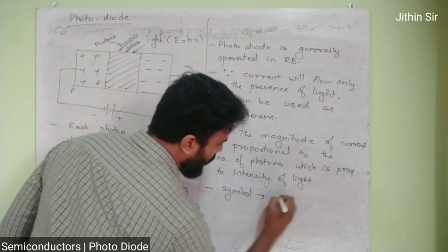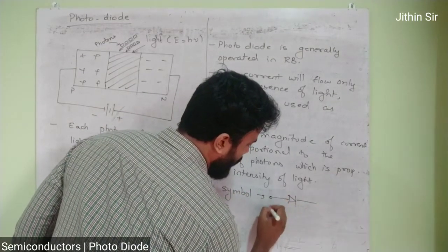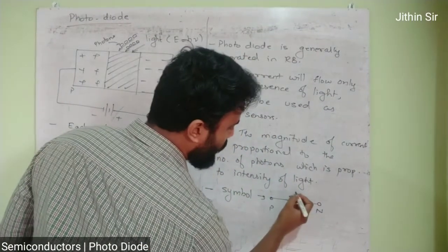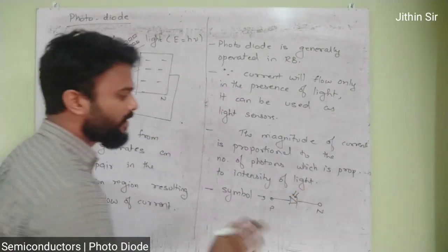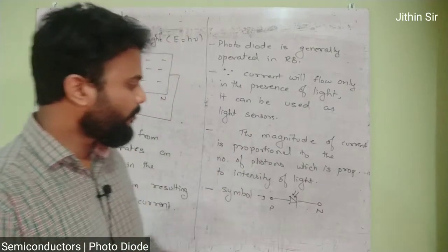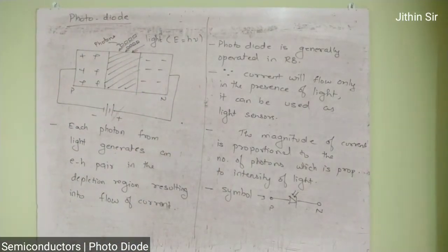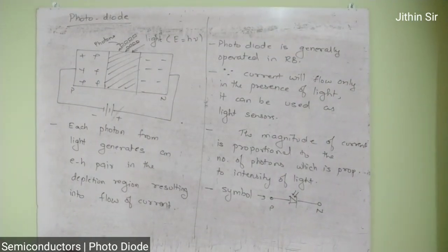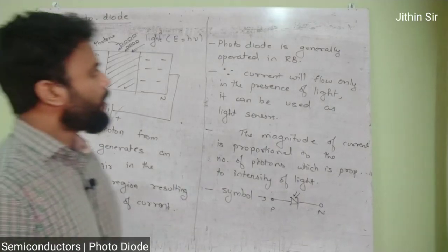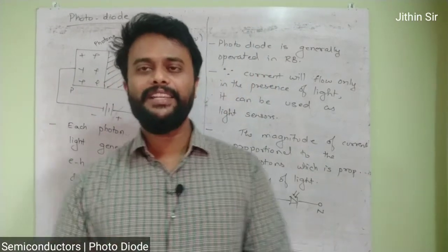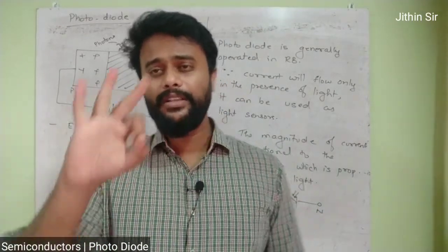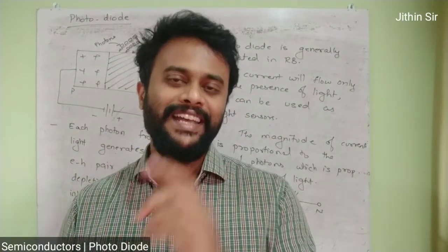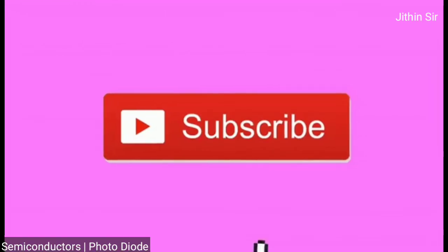Photo diode کا symbol کافی simple ہے — آپ کو ایک simple diode بنانا ہے، یہاں P یہاں N رہے گا، اور اس diode پر light اندر کی طرف آ رہی ہے — اس لیے یہ ساری چیزیں ہو رہی ہیں۔ تو اس particular video میں میں نے آپ لوگوں کو P-N junction diode کا third application — photo diode — بتایا ہے۔